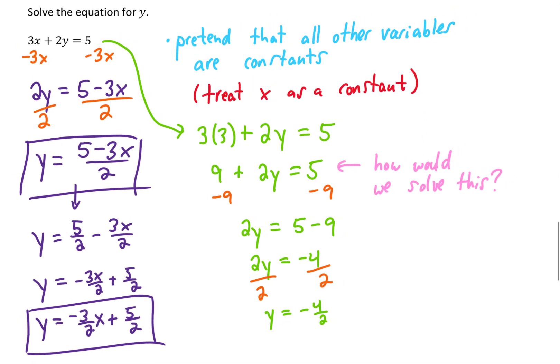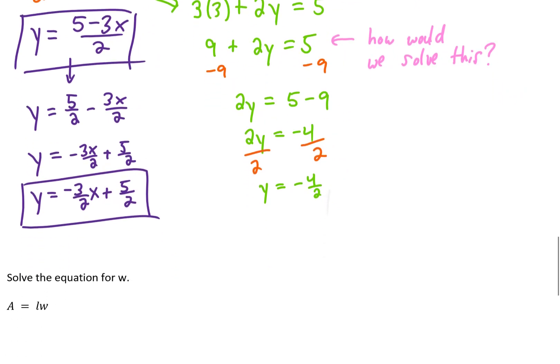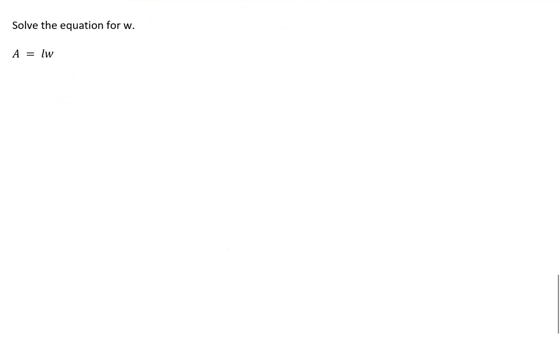There was a lot going on in that problem. Feel free to hit pause whenever you need to. The next problem says solve the equation for w. The formula a equals l times w is the area of a rectangle — length times width. Because we're solving for w, we'll treat a and l as constants.